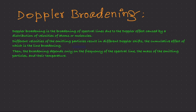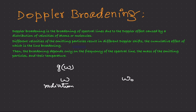Now we will find out the line shape function for the Doppler broadening. In order to obtain the line shape function G(Ω) in case of Doppler broadening, we will assume only the Doppler broadening and neglect the natural broadening and collision broadening. Let us consider radiation of frequency Ω passing through a collection of atoms which have a resonant frequency Ω₀, and the atoms move randomly.